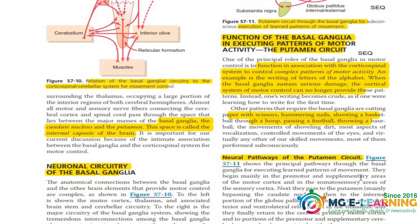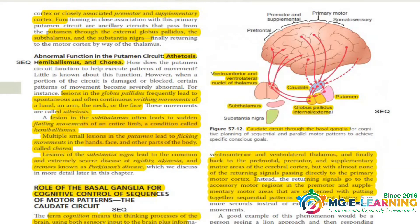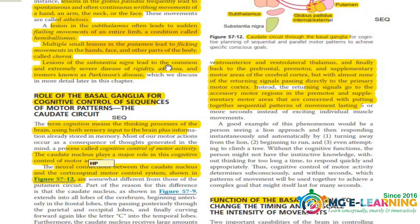Next is the neural pathway of the putamen circuit — the important points are highlighted. Its abnormality causes hemiballismus, chorea, and athetosis. The definitions of these three abnormal functions are very important.